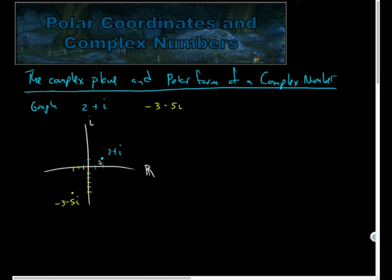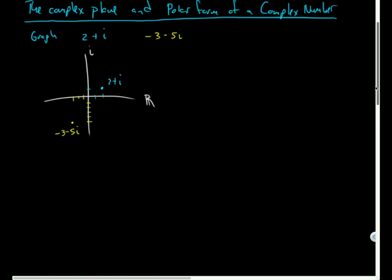So these are points graphed on the complex plane, and with these points I can also do some work where I could find the absolute value of a complex number. And the absolute value, let's first of all recall absolute value in the first place. So absolute value is defined as the distance a point is from 0, or a distance a number is from 0.